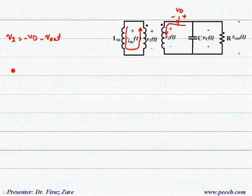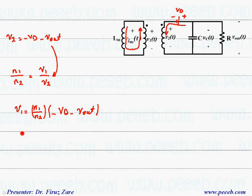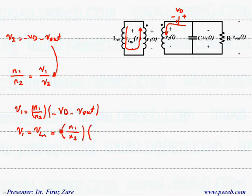Because of the turns ratio of the transformer, N1 over N2 equals V1 over V2. So we can find V1 in terms of this turns ratio, which is N1 over N2 times V2. We have V2 from this equation, that means minus Vd minus Vout. So the voltage across the primary, meaning the voltage across the magnetizing inductor Vm, equals N1 over N2 times of minus Vd plus Vout.